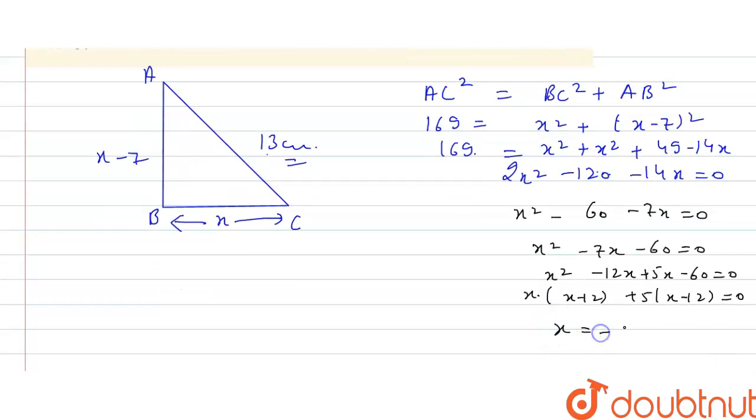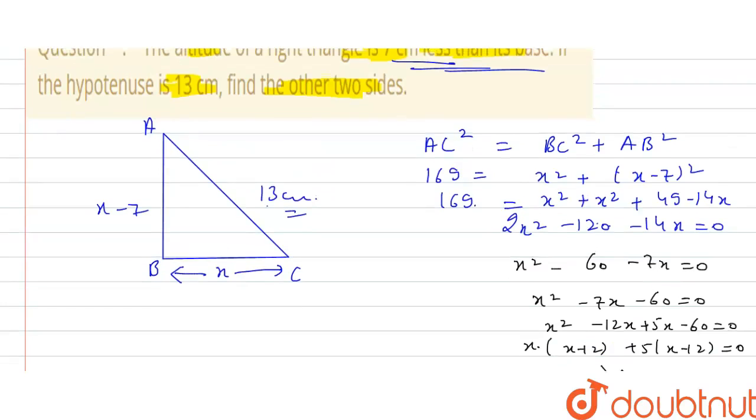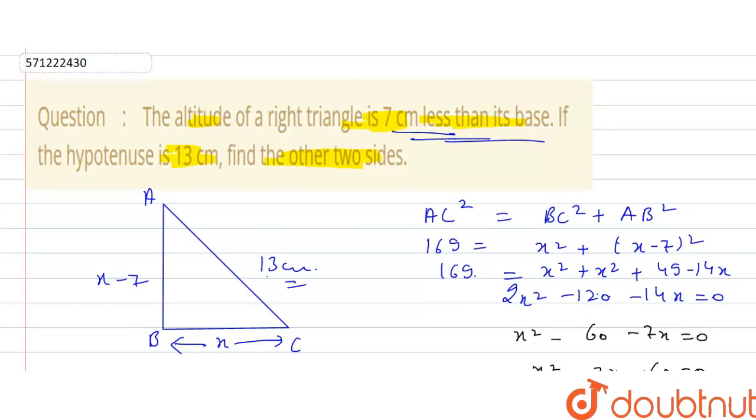So X is equal to minus 5 and 12. So we don't take the negative value, we take positive value. So base value is equal to 12, and 12 minus 7 is 5 cm. So base is 12 cm and altitude is 5 cm.